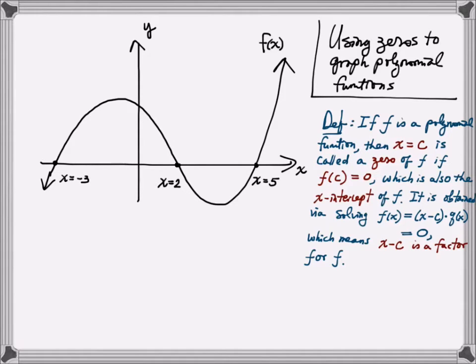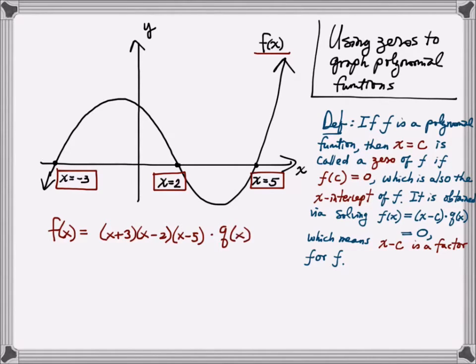It is obtained via solving the equation f of x equals x minus c times some other quotient q of x equal to zero, which means that x minus c is a factor for the function f. In this picture, I would call x equals negative 3 a zero for the polynomial function f. x equals 2 is also a zero. x equals 5 is also a zero. If these are zeros of the polynomial function f of x, that means f of x must have x minus c as factors, which means it must have factor x plus 3, x minus 2, and x minus 5. It should look something like this.